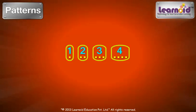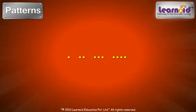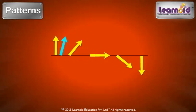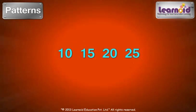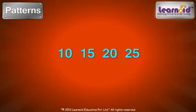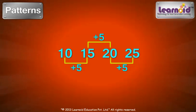Once we understand, we can find the next in pattern. Arrow is rotating from 5. In number patterns, there is some relationship between the next number. In this, numbers are increasing by 5.